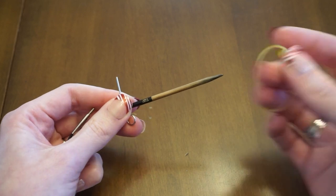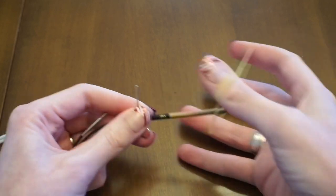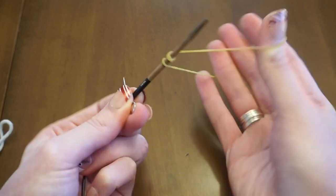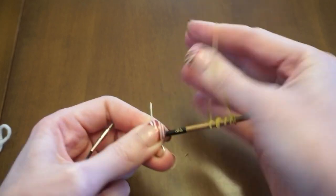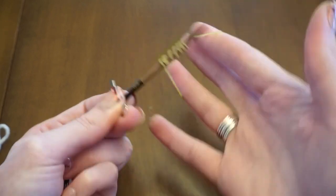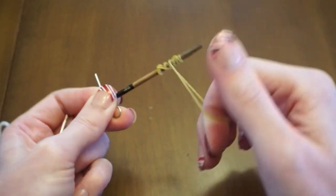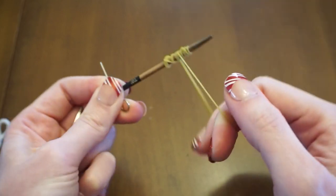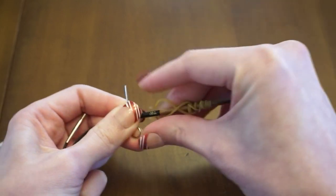So what I found works fairly well is if you take a rubber band and you just start wrapping it around the knitting needle. And this is kind of similar to like those can grip openers, you know those circle ones that you can use to loosen up cans.